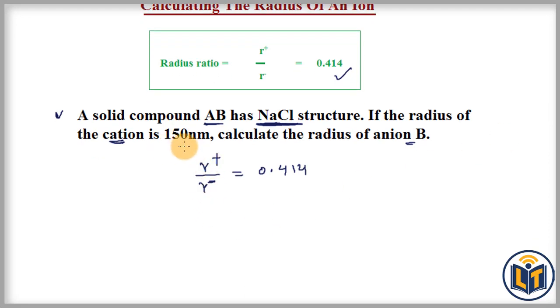Now we can plug in the values. R+ ion value is 150 nanometers. We have 150 nanometers and it is divided by r- ion (that is anion) equals 0.414. Now we can do the cross multiplication.